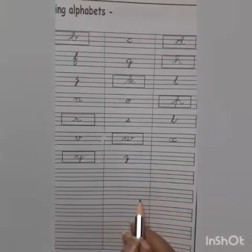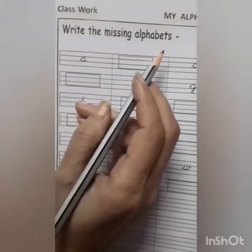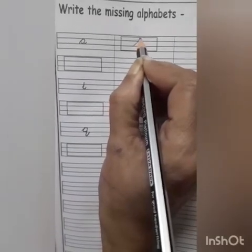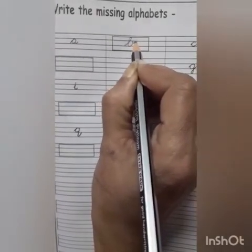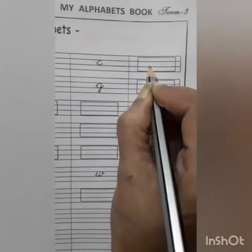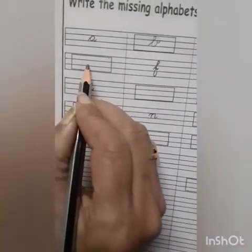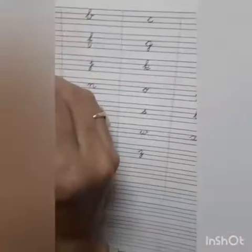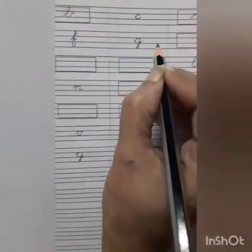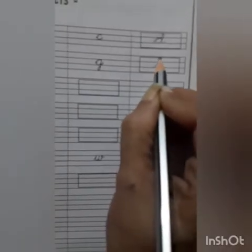Now come to press number 75. Children, again we will write the missing alphabets. A, then B — B is missing. Write B. Then C — which alphabet is missing? C, D. D is missing. Write D. Then D, then E. E, F, G — which alphabet is missing? G, H. H is missing. Write H.